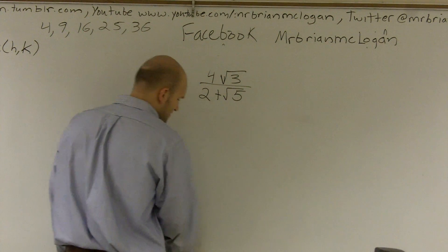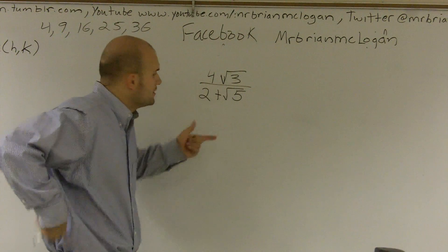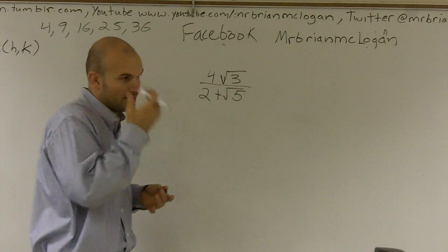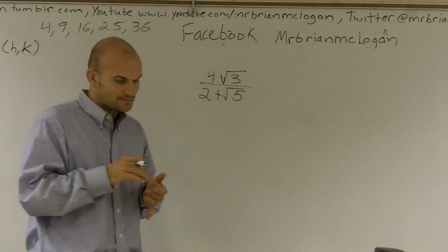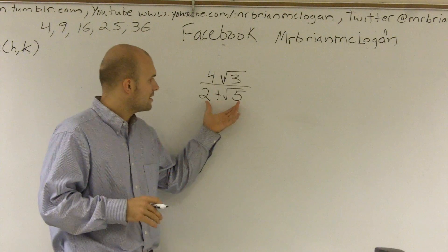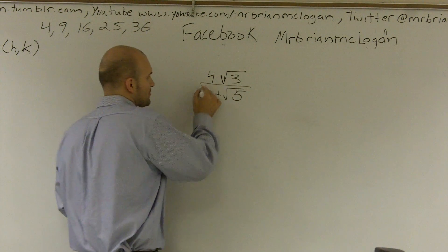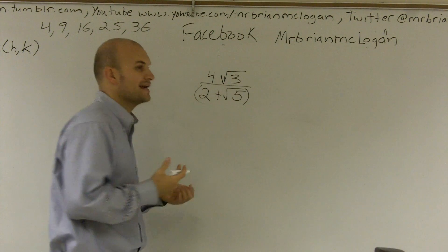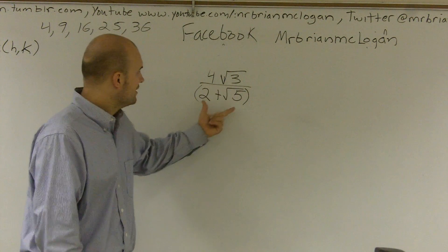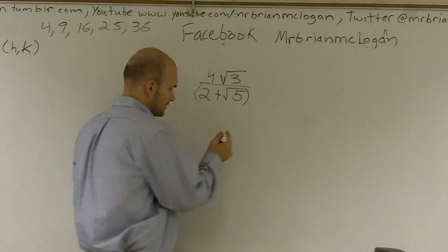A lot of students automatically look at this and say, let's multiply by 2 plus the square root of 5. It makes sense — that's what I've always told them. But it does always work except when you're working with two terms that are added or subtracted. A lot of times we put these in parentheses and call them a binomial.